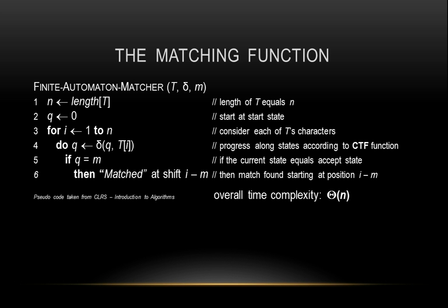On the next line, if the transitions progress all the way to the accept state, that means that a match is found. At this point, the match is printed and stated within the program that is found as shift i minus m. After a match is found, the algorithm continues to find remaining matches within the remaining text string.